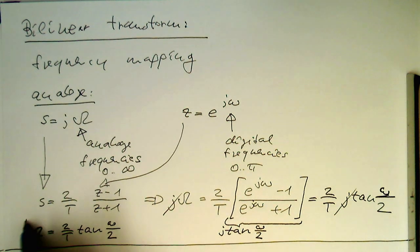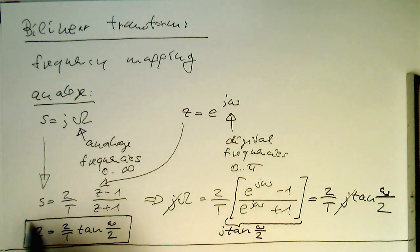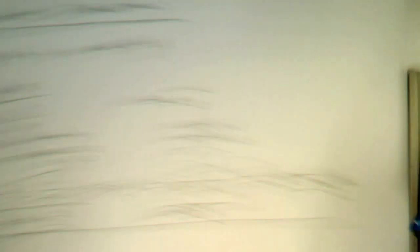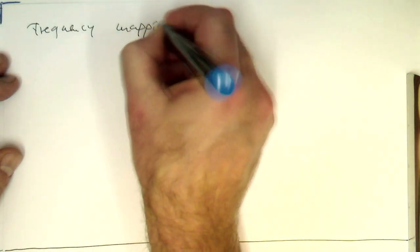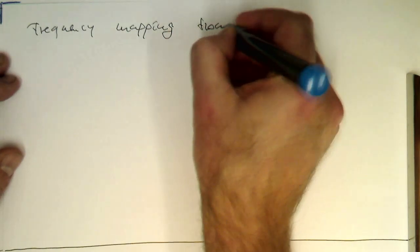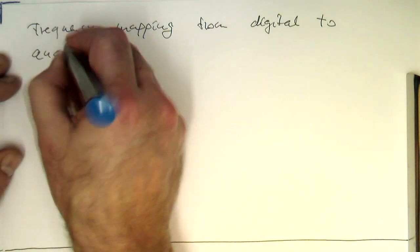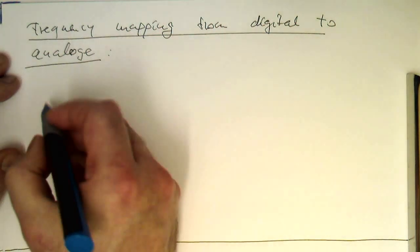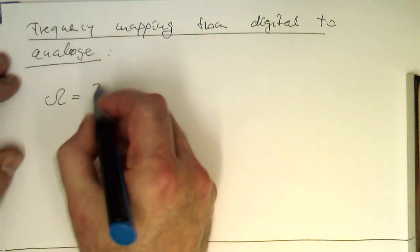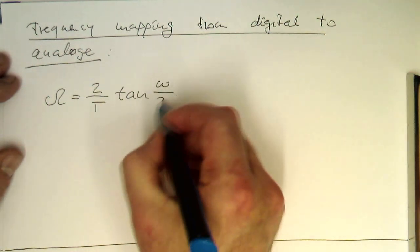So that's our mapping for the bilinear transform. And this equation we actually need later on for the pre-warping of frequencies. So therefore it's a pretty important equation. So let's redraw this here on the next sheet of paper. So the frequency mapping from digital to analog.